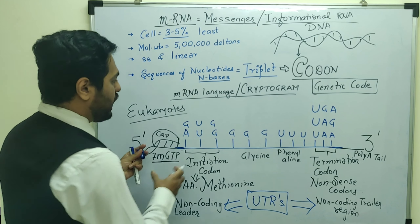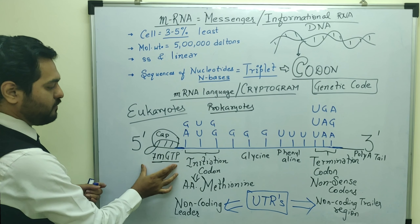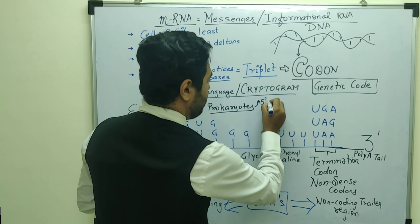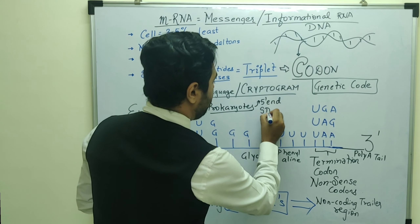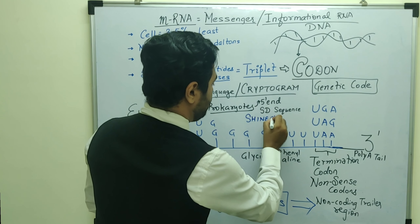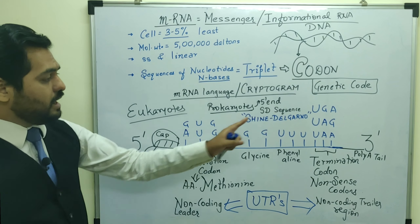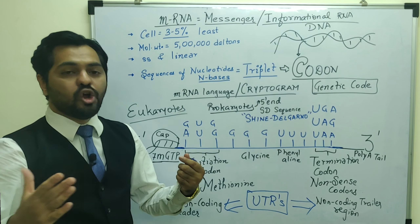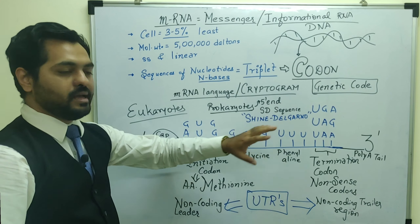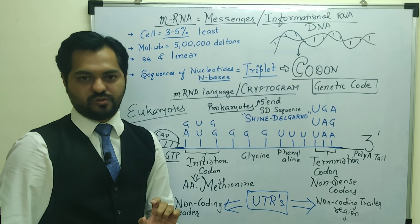In prokaryotes, the mRNA structure is different — there is no 7-mgTP cap and no poly-A tail. Instead, in prokaryotes near the 5' end, there is a sequence called the SD sequence — the Shine-Dalgarno sequence — named after the two scientists who identified it. This sequence helps in the attachment of the prokaryotic mRNA to the smaller subunit of the ribosome. Correspondingly, on the smaller subunit of the ribosome there is the ASD sequence — the anti-Shine-Dalgarno sequence — as discussed in the translation video.